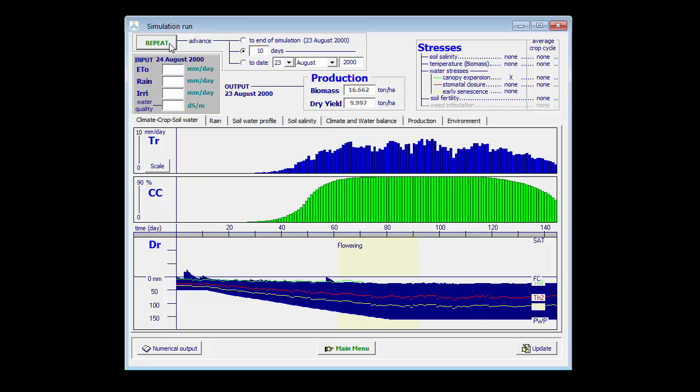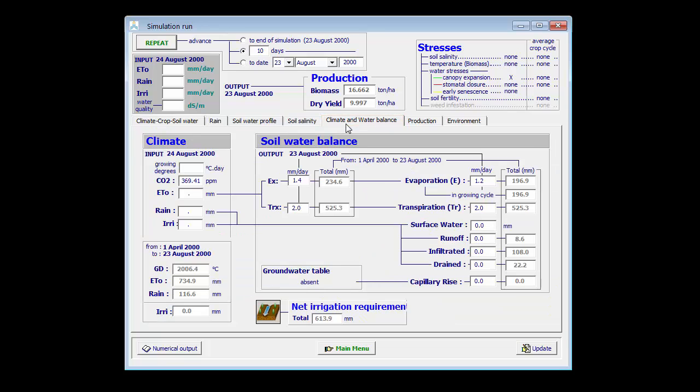So, throughout the season, AquaCrop keeps the soil water content at that level. By looking here at climate and water balance, I can see that the net irrigation requirement is 613.9 mm over the season.